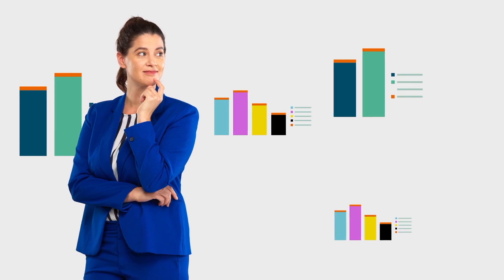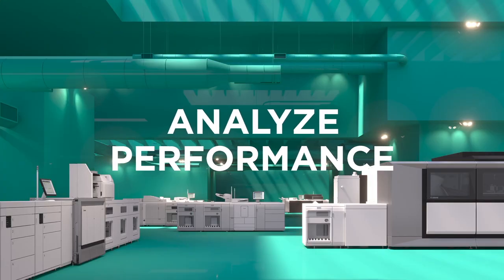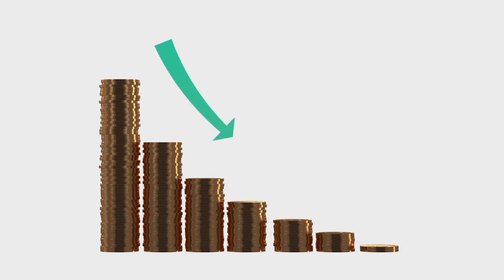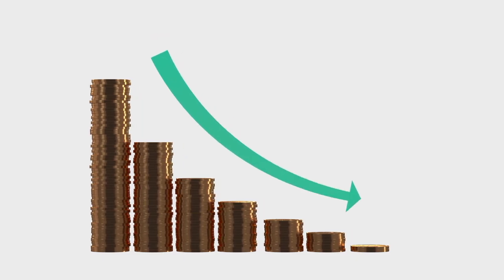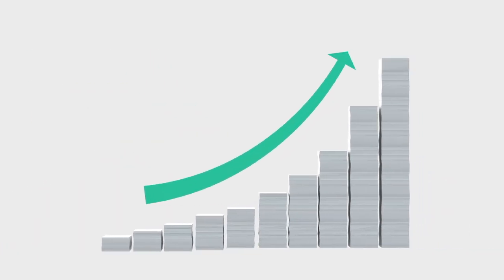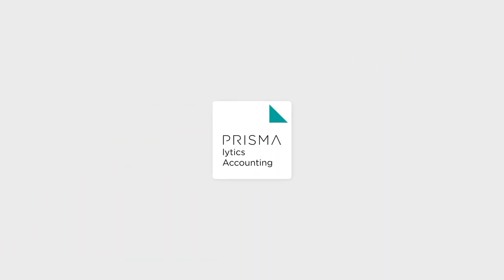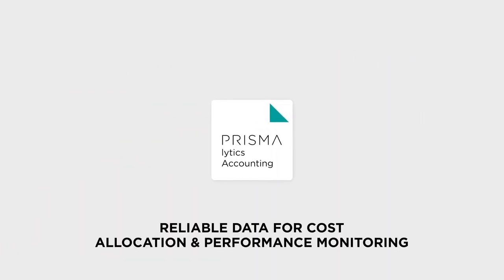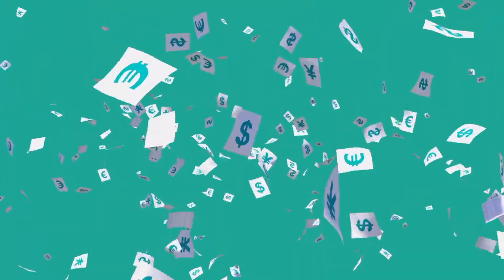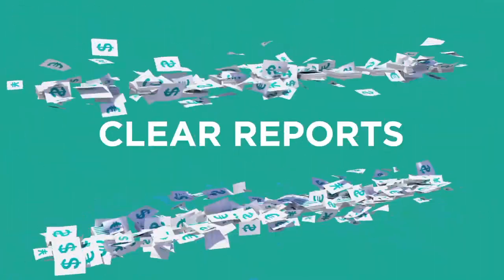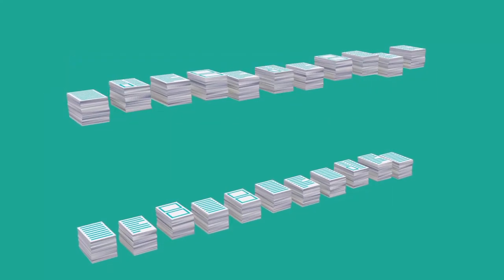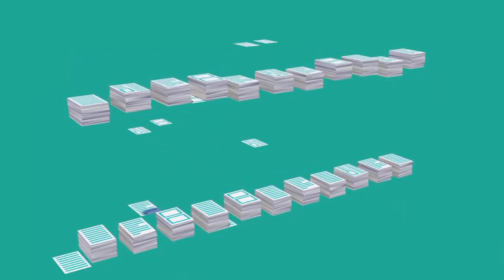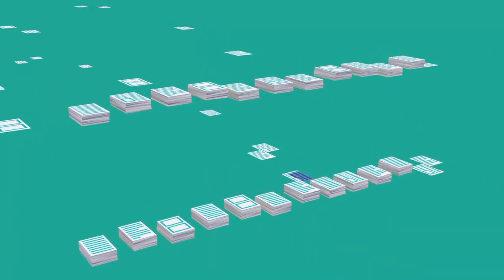Analyze how performance varies over time, which can help reduce cost and optimize productivity. Meet PrismaLytics accounting — it collects accounting information and presents it in clear reports, helping you monitor and ensure costs are charged accurately to the correct budget holder or client.